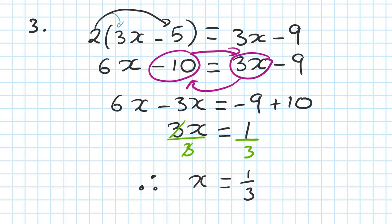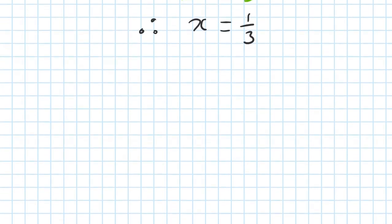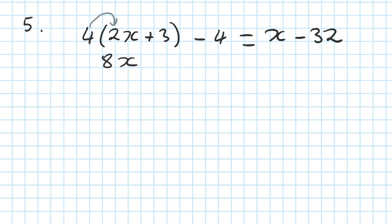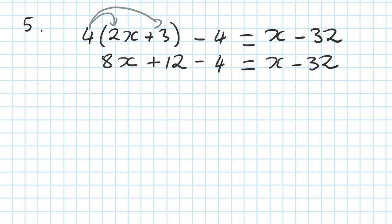Let me move along. I'm going to do this one now — same thing, same process, but a little bit more flavor. Number 5: 4 times (2x plus 3) minus 4 is equal to x minus 32. Step number 1 — remove the bracket first. So I go 4 times 2x: 4 times 2 is 8, that means 8x. Then 4 times 3 is 12, so you add 12. Minus 4 I just write it down, and x minus 32 on the right. That's step number 1.